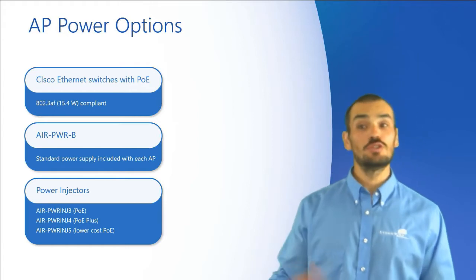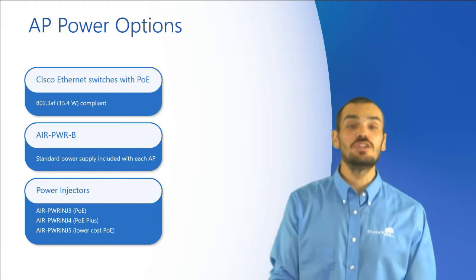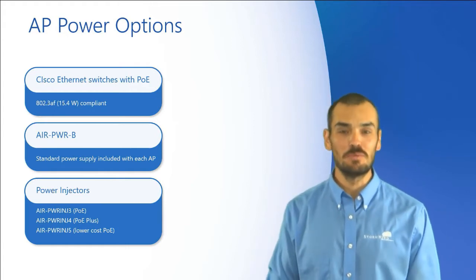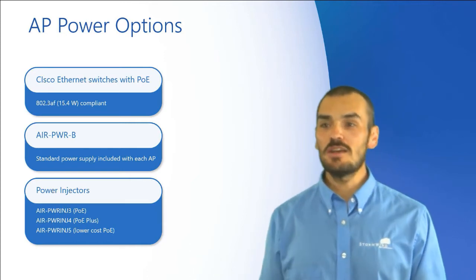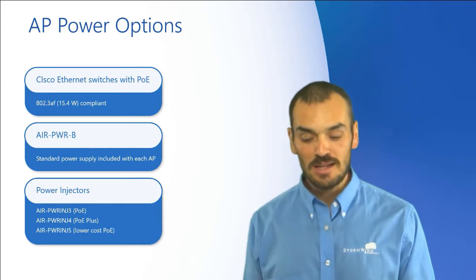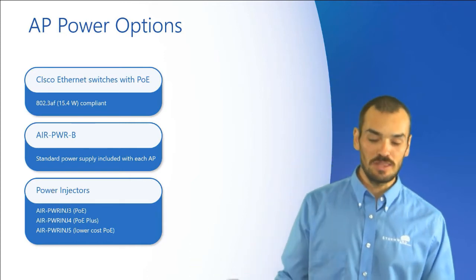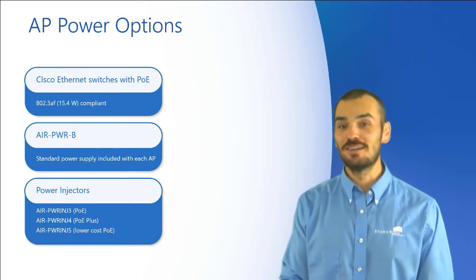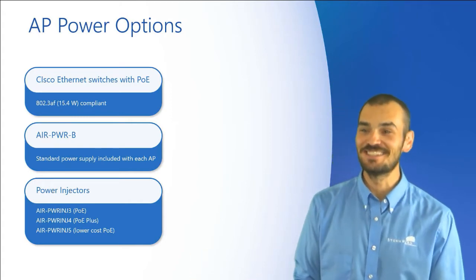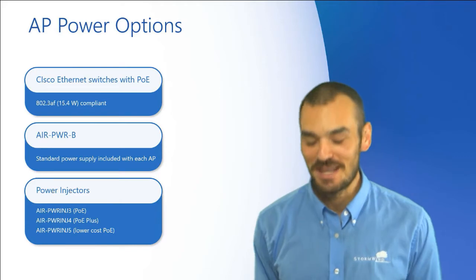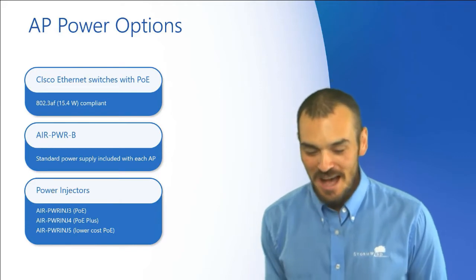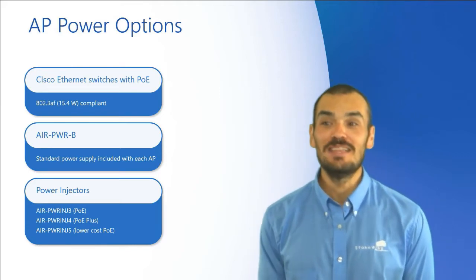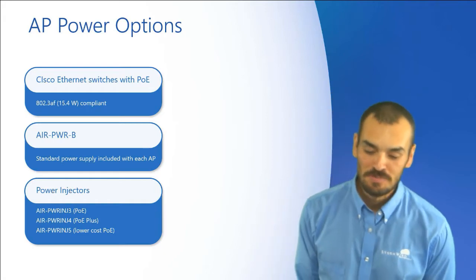In most cases, a standard POE switch will not be able to power those access points plus their modules. So in scenarios like those, you would have to add an injector in addition to the power that comes from the POE switch. The standard power supply is always going to be included with each access point — those are the standard power supplies that pretty much come in the box with all of your access points.